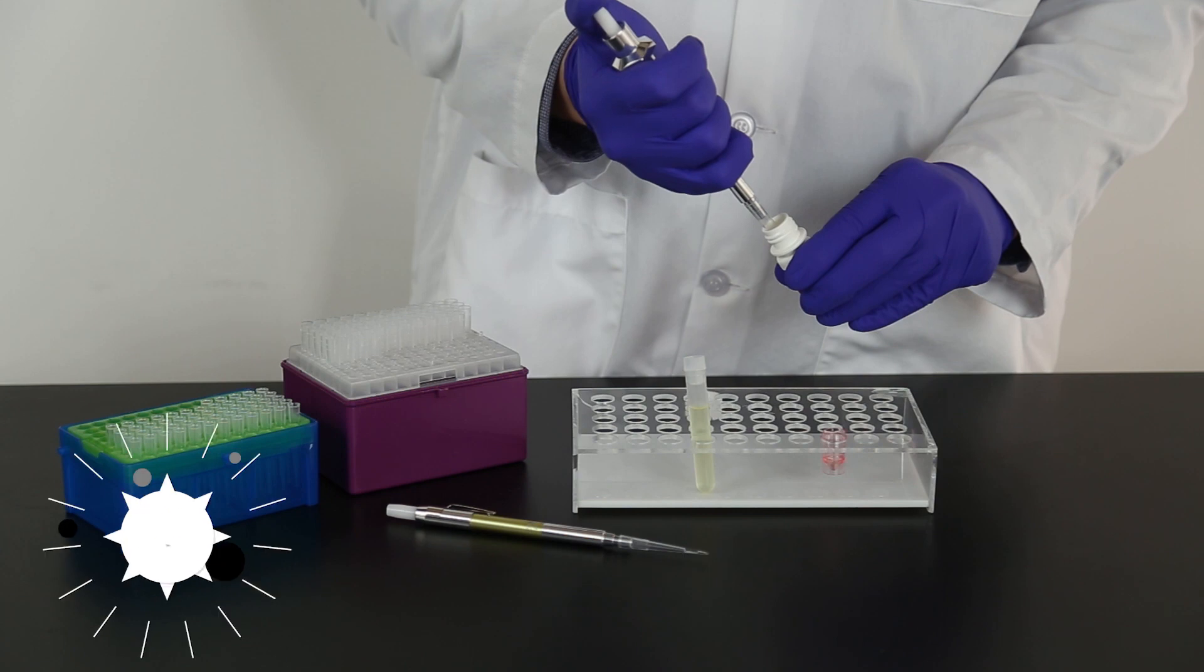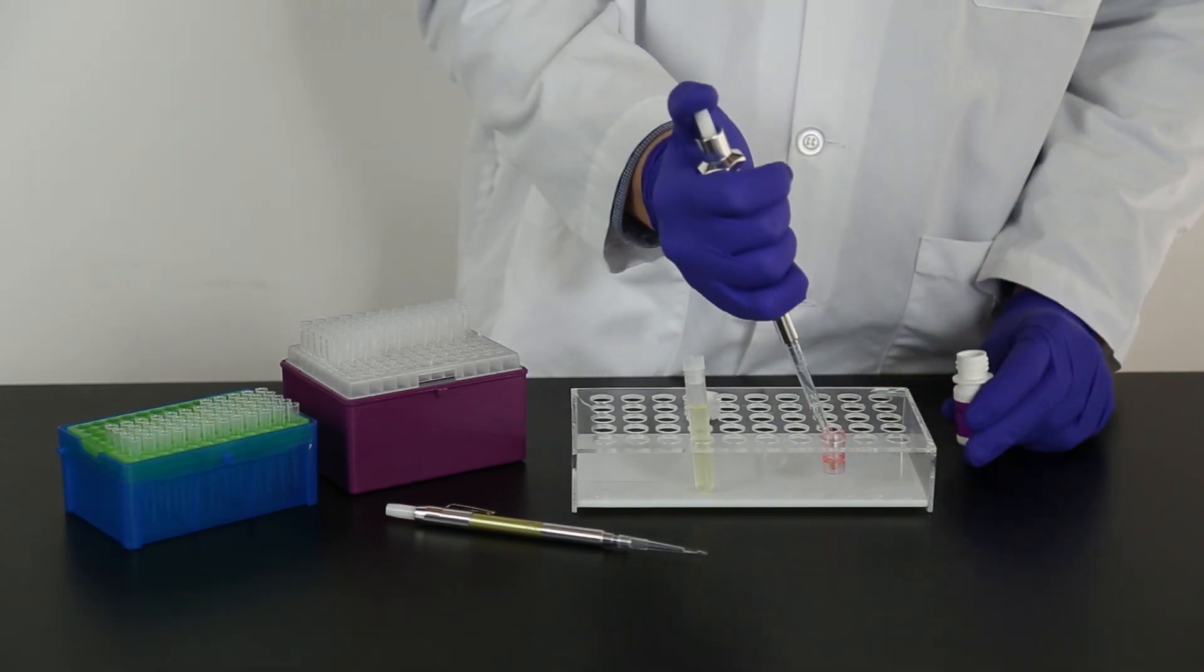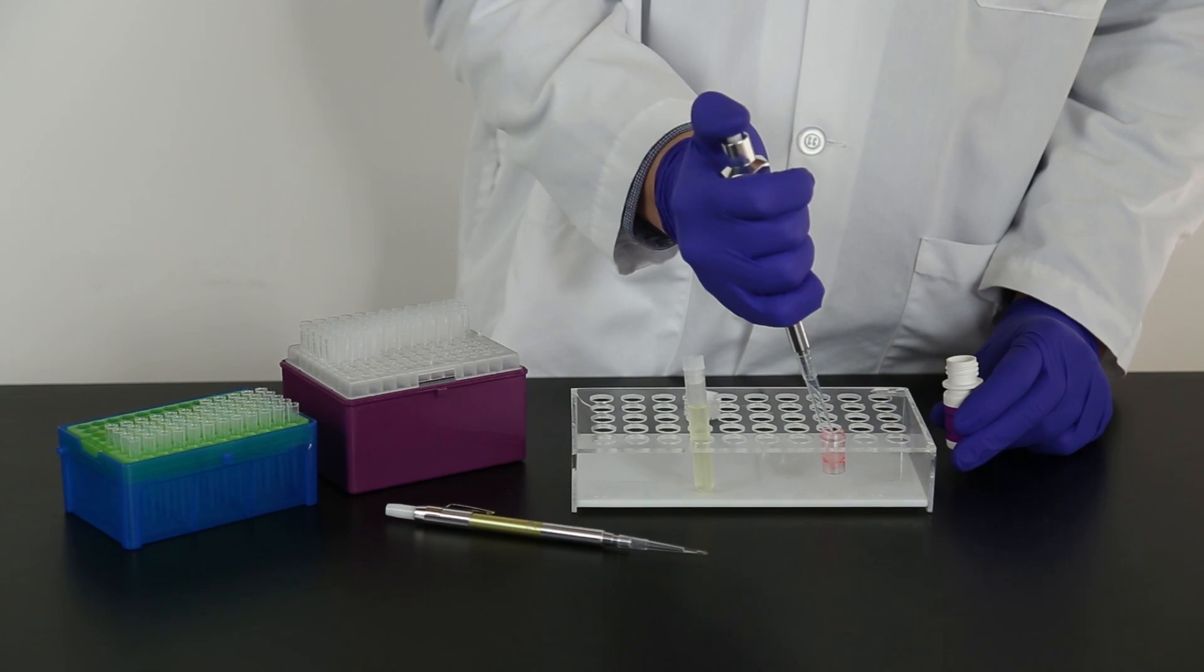Next, add 400 microliters sample diluent to the sample cup. Mix by pipetting up and down five times. It is important to mix thoroughly.